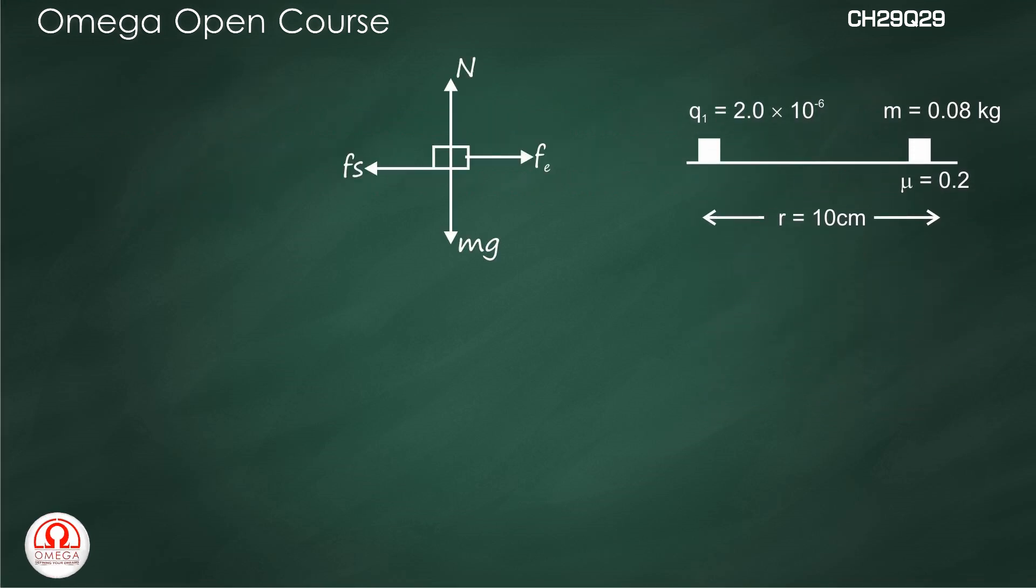Let the charge of the second particle be Q. Since the second particle is in equilibrium, the reaction force N equals mg, and the static friction force Fs equals the electrostatic force Fe.